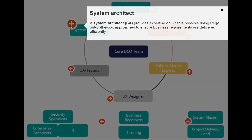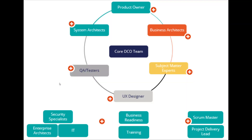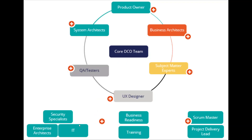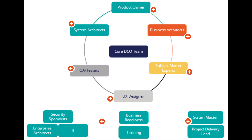System architects are the actual developers. QA testers test whether the acceptance criteria defined in the user story has been achieved by the dev team. UX designers handle user experience design. These are the core DCO members, but you can also involve extended DCO team members — stakeholders with specialist knowledge and users of the application. When required, these specialists can be called upon; they are not required in all DCO sessions.